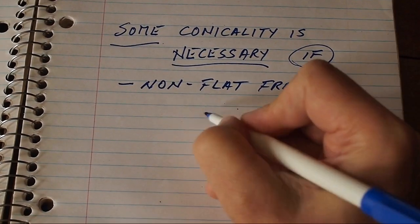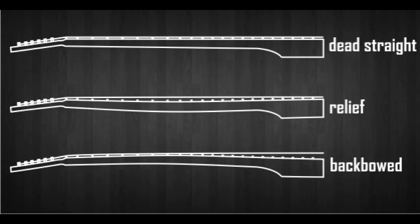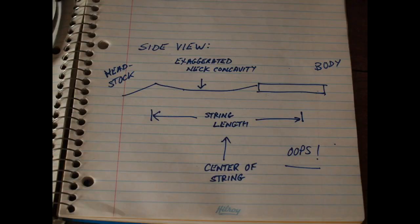Consistent action is not possible with a straight radius unless you compensate with neck relief, like slacking the truss rod so that the fretboard is slightly concave. But even doing that, the compensation isn't going to be accurate.